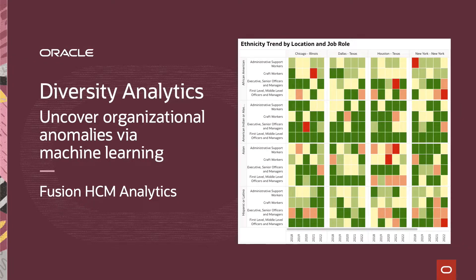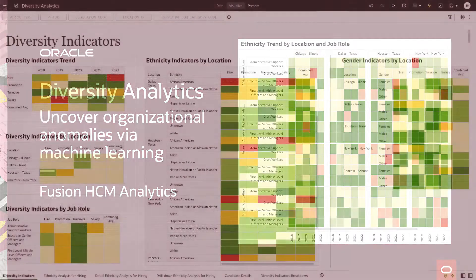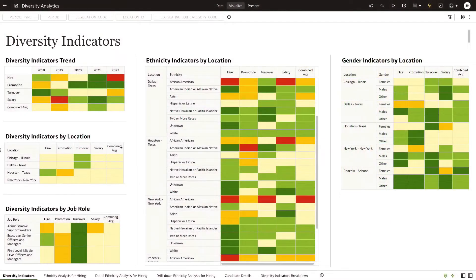Do you find it challenging to uncover organizational anomalies in hiring, promotion, salary, and other decisions that directly impact your employees? Oracle Fusion HCM Analytics offers ready-to-use machine learning-based diversity analytics to indicate anomalies such as unconscious bias or discrimination within your organization.